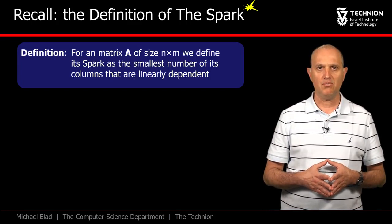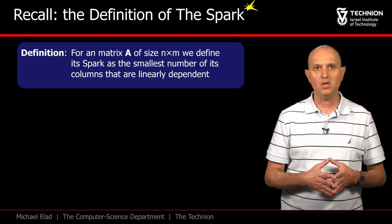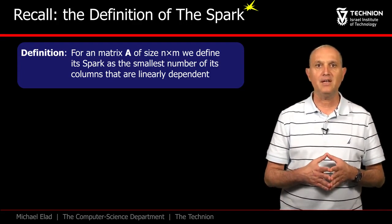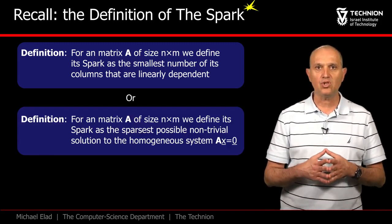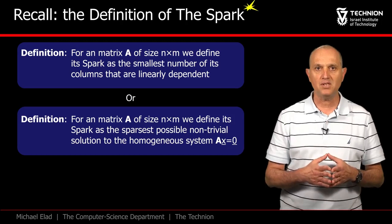Recall the definition of the spark, being the count of the smallest set of columns from A that are linearly dependent. Put differently, it is the cardinality of the sparsest non-trivial vector in the null space of A.